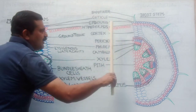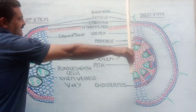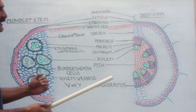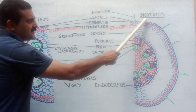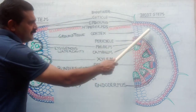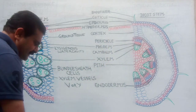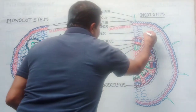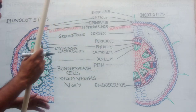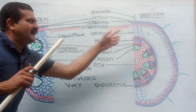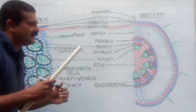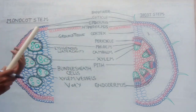In case of dicot all these structures are present — a total of seven layers: first epidermis, second hypodermis, third cortex, fourth endodermis, fifth pericycle, sixth medullary rays, seventh pith.